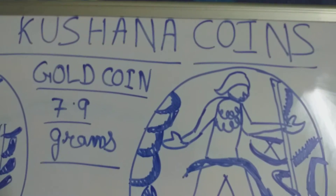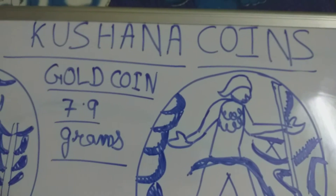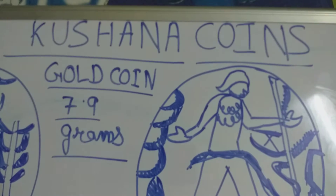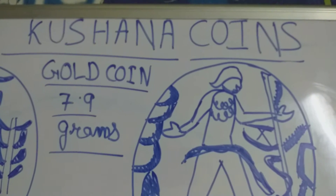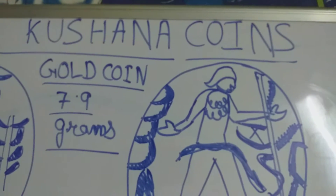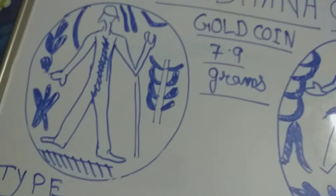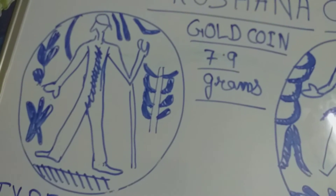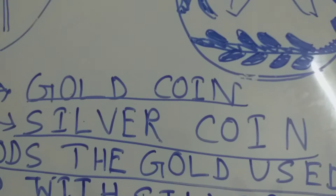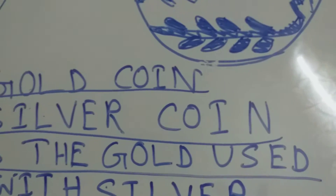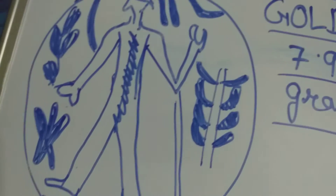Good evening everyone, I am Sudhaneshan Gupta, welcome to my channel. My topic is Kushana coins. In the Kushana period, there are two types of coins: one is gold coin and one is silver coin.